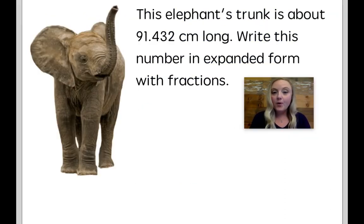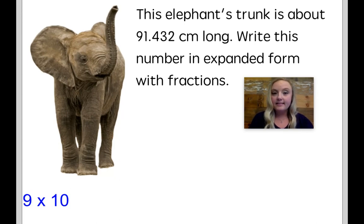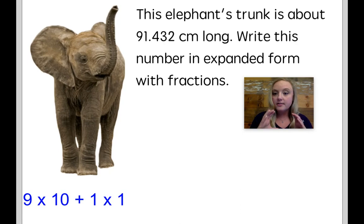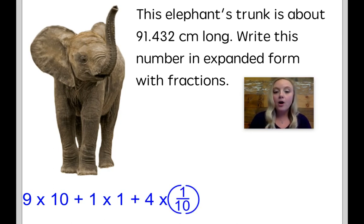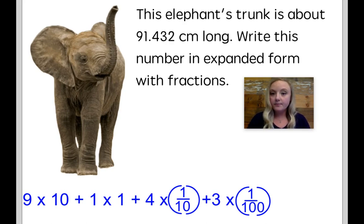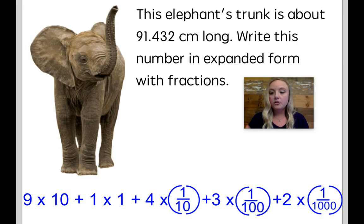This elephant's trunk is about ninety-one and four hundred thirty-two thousandths centimeters long. Write this number in expanded form with fractions. Let's take a look at the whole number first. My first digit is nine in the tens place, so nine times ten is ninety. Next, I have one — that's just one group of one, one times one. Now I have my decimals, but since I'm putting it with fractions, I'm going to write fractions in my parentheses. First, I have four tenths — that's four groups of one tenth, which looks like four times one over ten. Next, I have three in the hundredths place — that's three groups of one hundredth, three times one over one hundred. Last, we have two in the thousandths place — that's two groups of one thousandth, two times one over one thousand.